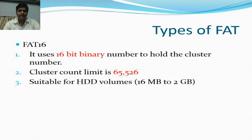The next type of FAT is FAT16. It uses a 16-bit binary number to hold the cluster number. The cluster count limit in FAT16 is 65,526. It is suitable for hard disks whose volume is between 16 MB and 2 GB.